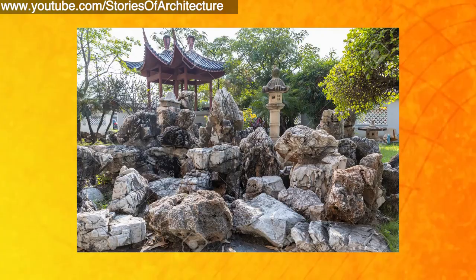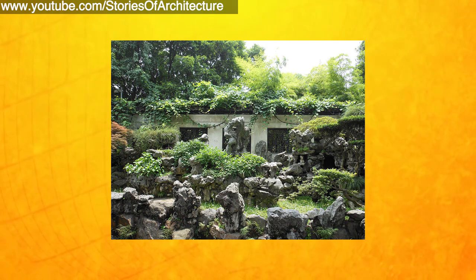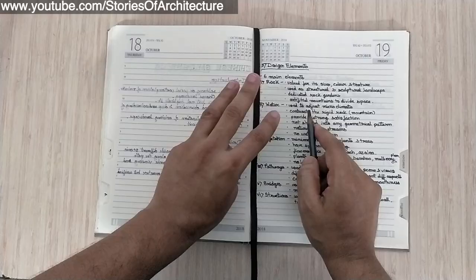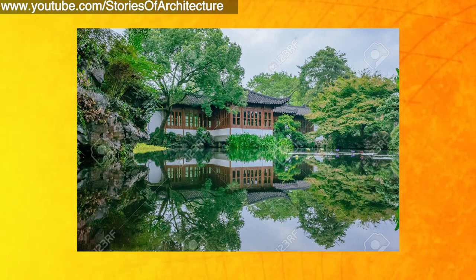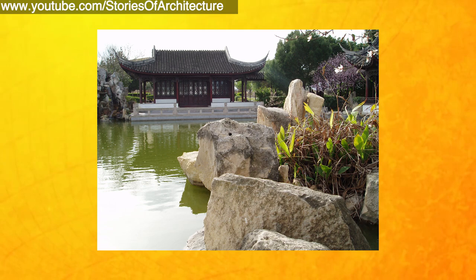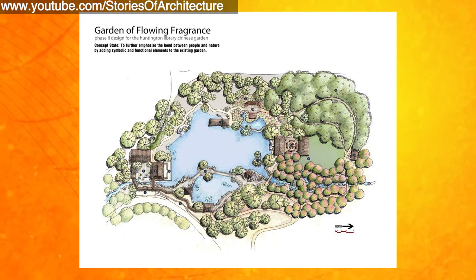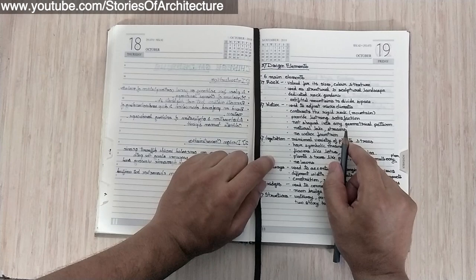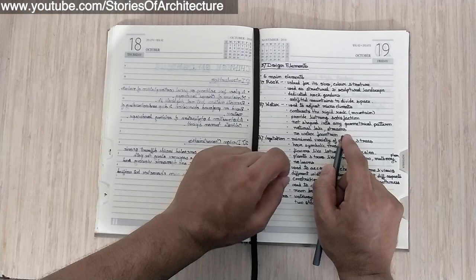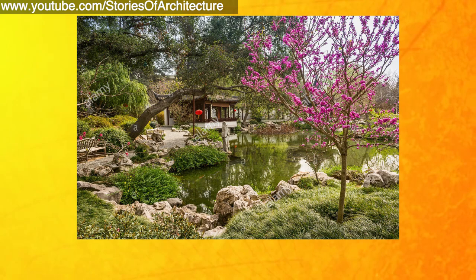The third category is design elements. There are six main elements. The first is rock — valued for its size, color, and texture. It is used as a structural and sculptural part of the landscape. There are dedicated rock gardens, and rocks are used to make artificial mountains and divide space. The second element is water — used to adjust the microclimate, and it provides a contrast to the rigid rock or mountain. It also provides listening satisfaction. Water is not shaped into any geometrical pattern; there are natural lakes and streams. Importantly, there is no water fountain in Chinese gardens.